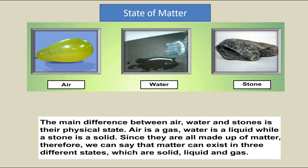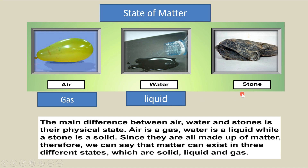The main difference between air, water and stone is their physical state. Air is a gas, water is a liquid, while stone is a solid. Since they are all made up of matter, we can say that matter can exist in three different states: solid, liquid and gas.